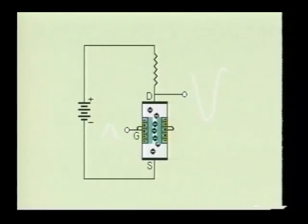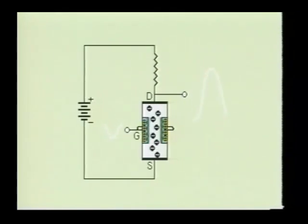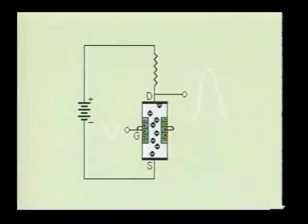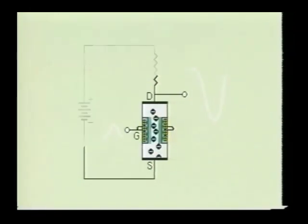Unlike the bipolar junction transistor, the JFET must be biased to stop the current flow through the device. In this respect, the junction field effect transistor operates much like a vacuum tube.